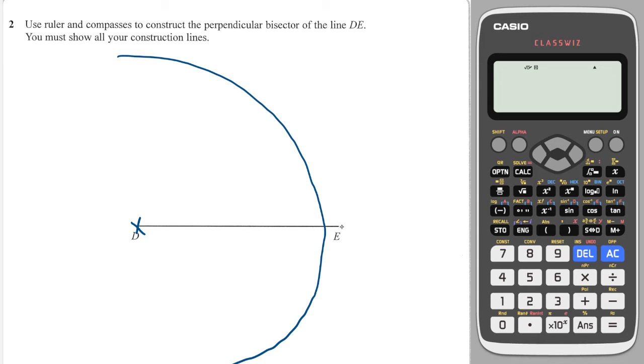And then what I'll do is I'll put the needle on the other side and I'll make sure that the distance between the needle and the pencil stays exactly the same. And then I would draw another arc like that. And if I've done it correctly the two intersection points when joined together with a nice ruler will come down like that. And they will split the line DE in half and the red line will be perpendicular to DE.